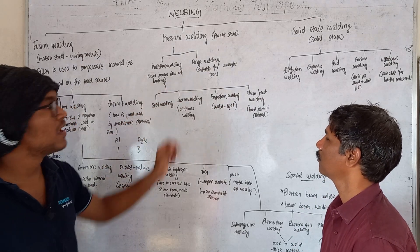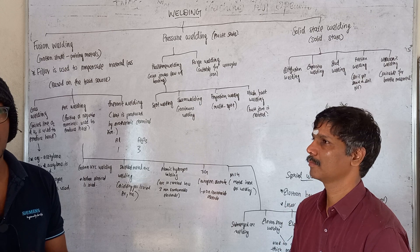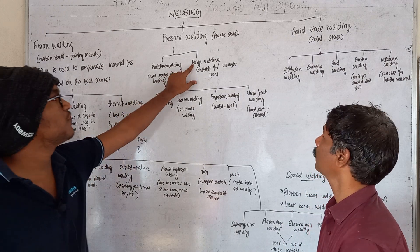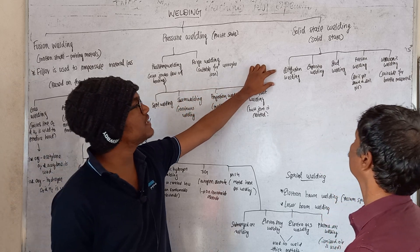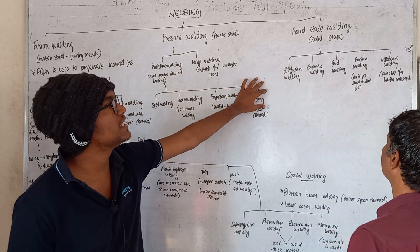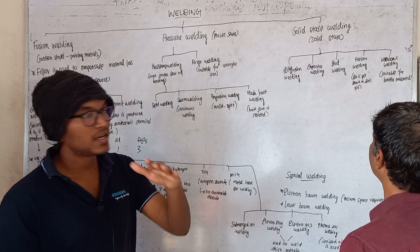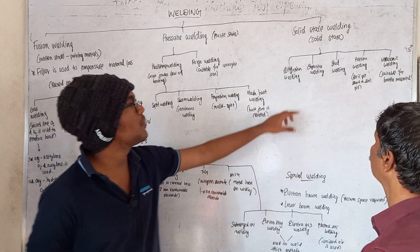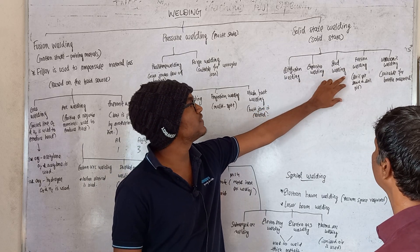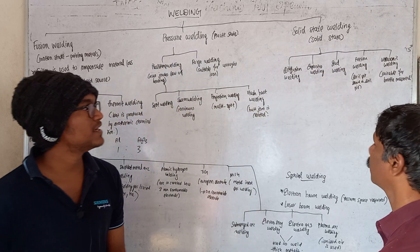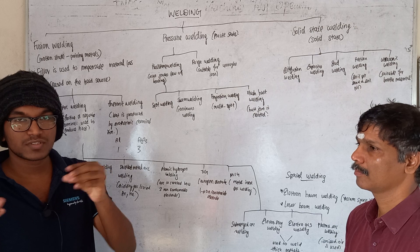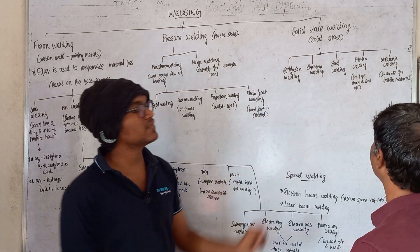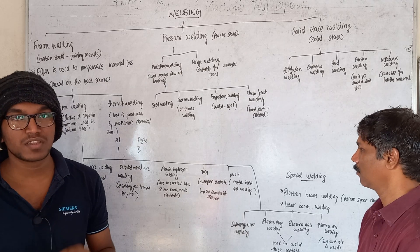For forge welding, it is used with wrought iron, which is the purest form of iron and is highly malleable. For solid state welding, the types include diffusion welding, explosive welding, metal plate welding, stud welding, friction welding — used for drill bits and shafts — ultrasonic welding, which is most suitable for brittle materials.